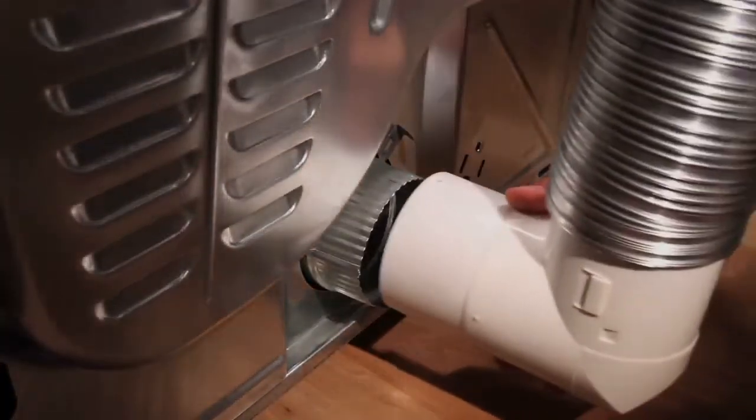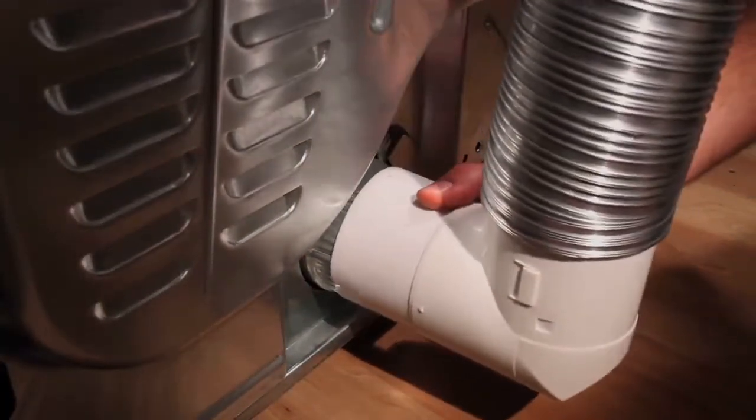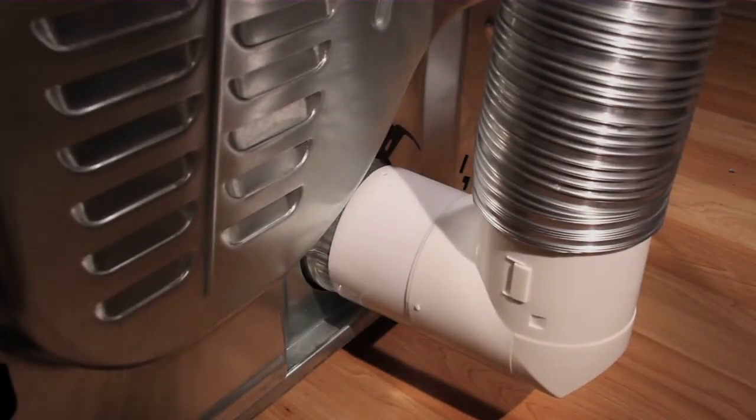Now, simply slide an open end of the elbow onto the dryer exhaust port. In some cases, you may require the use of the extension collar to reach the exhaust port.